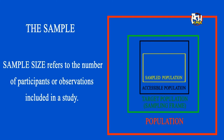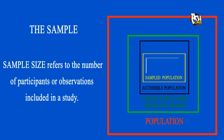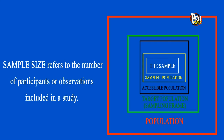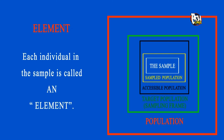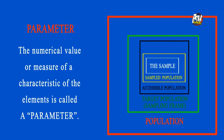The sample size is the small group of individuals, participants, respondents, or observations that provide the study data and information. It is illustrated in a white rectangle. Each individual in the sample is called an element, and each element with a numerical value or measure is called a parameter.